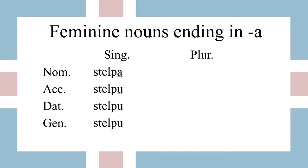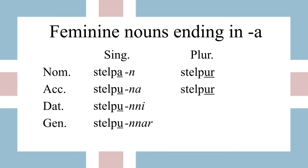Now, with the definite article afterward, meaning 'the girl,' we have in nominative stelpan, accusative stelpuna, dative stelpuni, genitive stelpunar. The plural nominative form is stelpur, and accusative is the same — and just as a heads up, feminine nouns are always the same in nominative and accusative plural for any form. Dative, we have stelpum, and genitive we have stelpna, which is a slightly unusual form, so watch out for that n insertion with these feminine nouns ending in a.